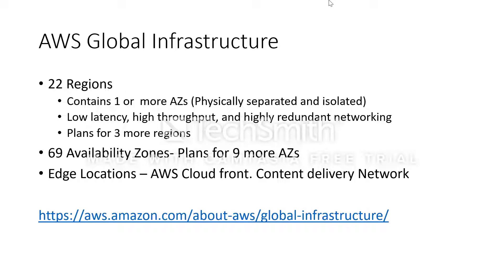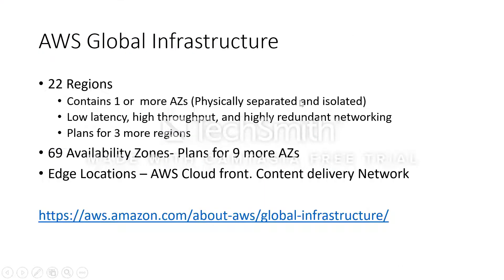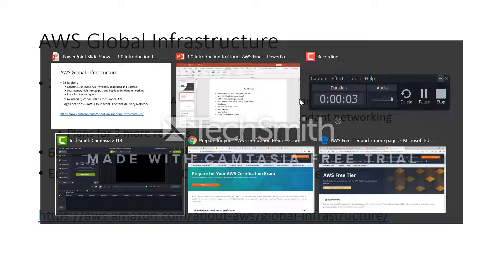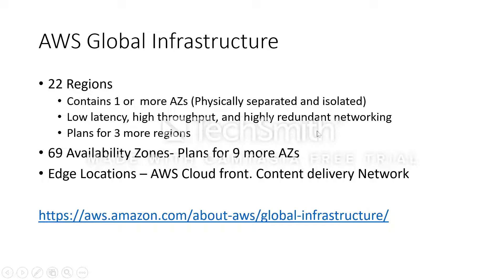AWS Global Infrastructure. As of now, we have about 22 regions and 69 availability zones. Within a region you have one or more availability zones, and an availability zone is basically a data center — or a combination of data centers.